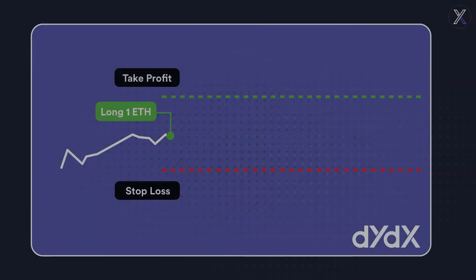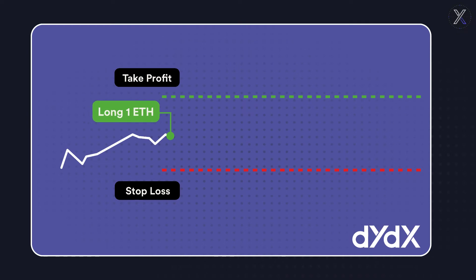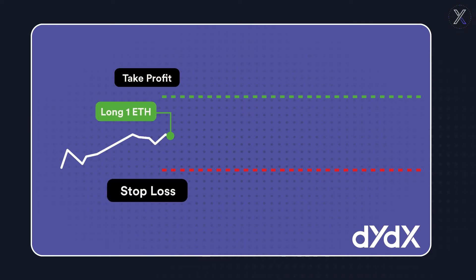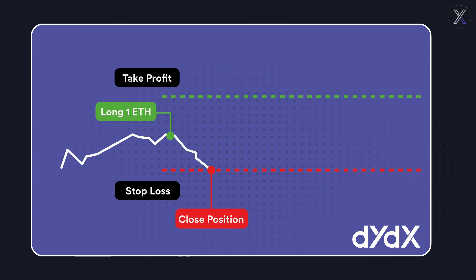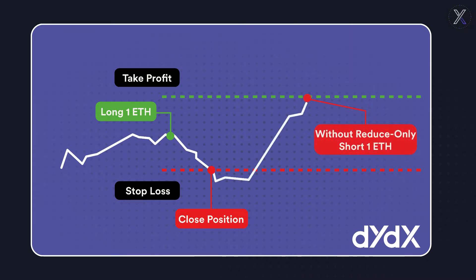Let's look at an example to illustrate how this works. Imagine you have a 1 ETH long position, with a 1 ETH stop loss below the current price and a 1 ETH take profit order above the current price. Without the reduce only option, if the stop loss is triggered and your position is closed, and then the price rises to the level of your take profit order, that order would create a 1 ETH short position.